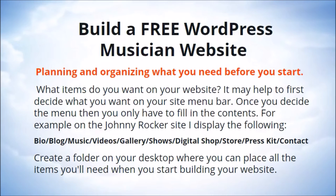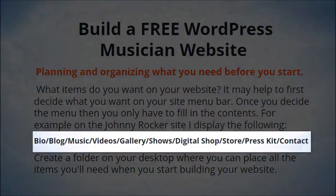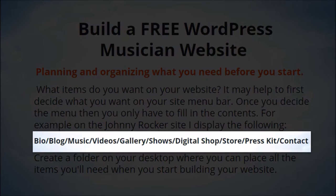The first thing we'll want to do is go over your planning and organizing of what you need before you start. You might ask: what items do you want on your website? It may help to first decide what you want on your site menu bar — once you decide the menu, you only have to fill in the contents. For example, on the Johnny Rocker site I display: Bio, Blog, Music, Videos, Gallery, Shows, Digital Shop, Store, Press Kit, and a Contact form.